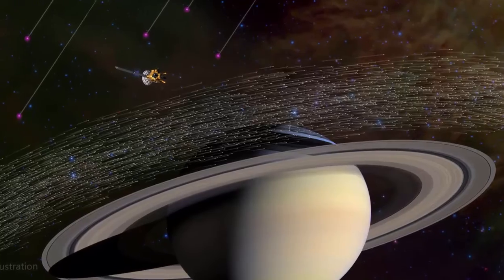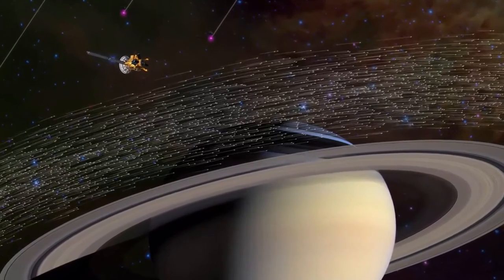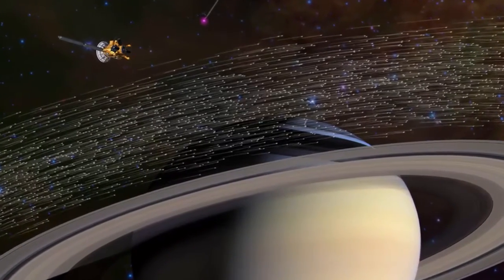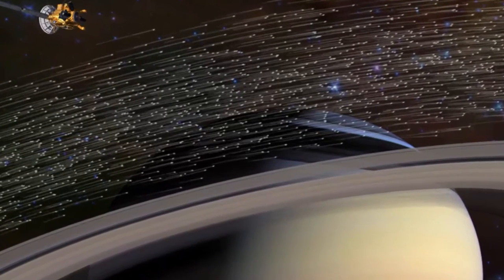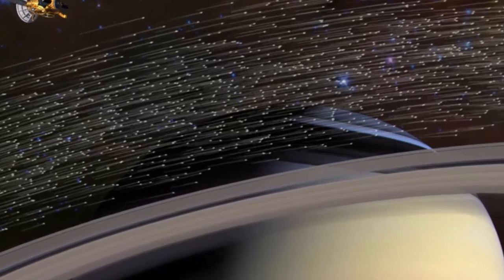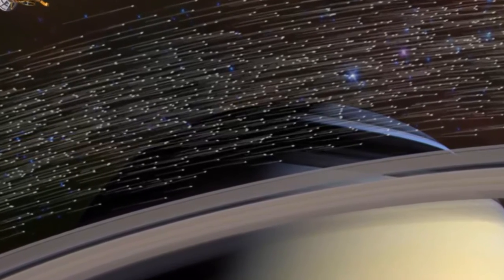Initially, EBLM J0555-57 A was suspected of hosting an exoplanet because something orbited in front of the parent star. Only closer examination of the measurements discovered its true nature.